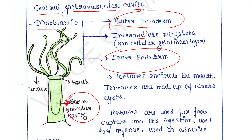However, they have an intermediate mesoglia present between the ectoderm and endoderm. This mesoglia is a non-cellular gelatinous layer — it does not contain any cells and is gelatinous in nature.